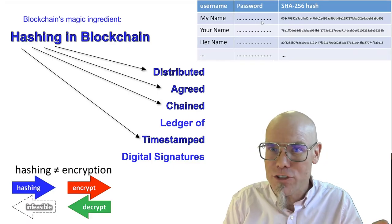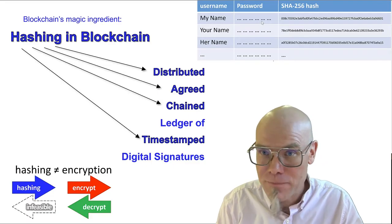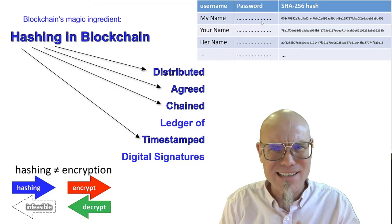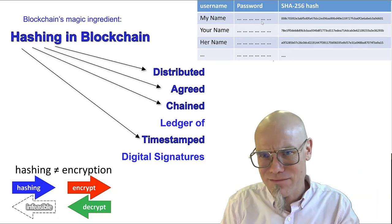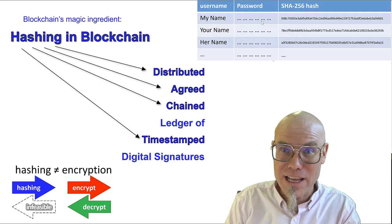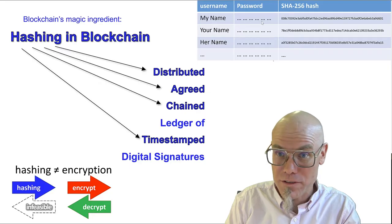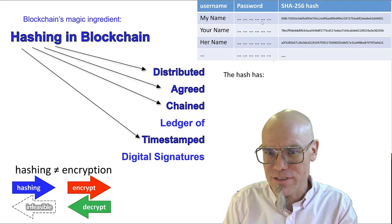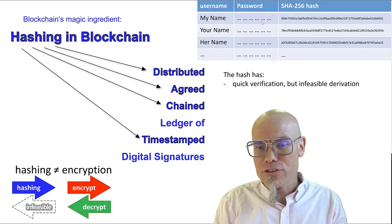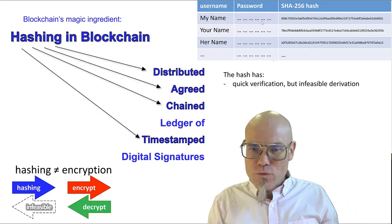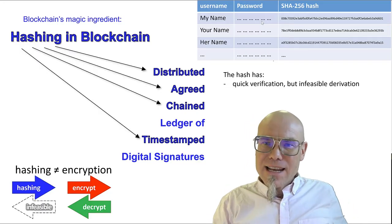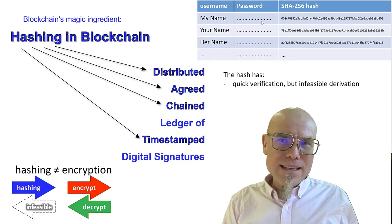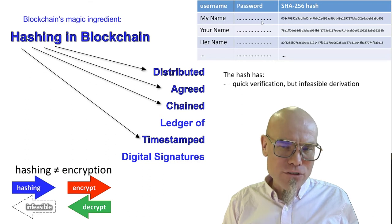That's a very common and very useful application. Otherwise, how often do servers get hacked — passwords would be everywhere and the digital age wouldn't really work. So what are some characteristics of this hash? First of all, maybe the most important one is that it has quick verification but it's infeasible to derive it. Once you have the password and put it into the server, it's easy to verify — I use the same function again, a one-way function.